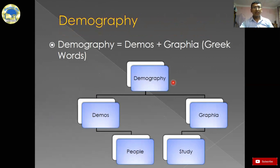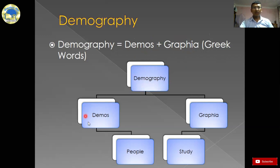So maybe all of you have heard this word Demography. Before going to this topic, you should know what Demography is. You should know its etymological meaning, the word's direct meaning. This word Demography is made up of two Greek words. First one is Demos and second one is Graphia. You can see in this table — Demos means people and Graphia means study. So in this way we can say that Demography means the study of people or study of human population.